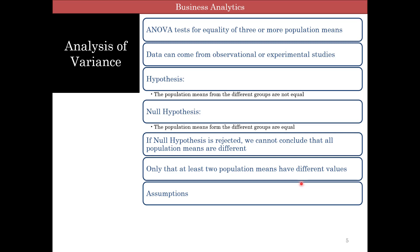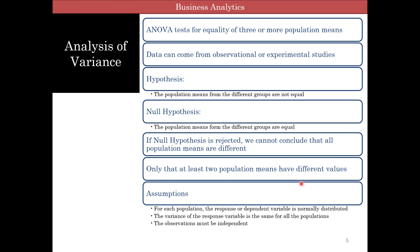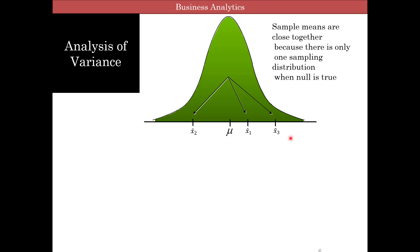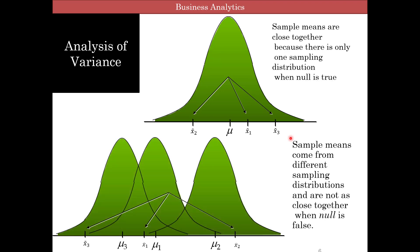ANOVA has three basic assumptions. First, for each population, the response or dependent variable is normally distributed. Second, the variance of the response variable is the same — we are assuming equal variance, unlike the independent sample t-test where we had equal and unequal variances; for ANOVA to work the variance must be equal. Third, observations must be independent. Visually, the null hypothesis says there is one sampling distribution and the sample means differ by pure random chance, but if it's not true, then we are saying the data comes from three different populations.